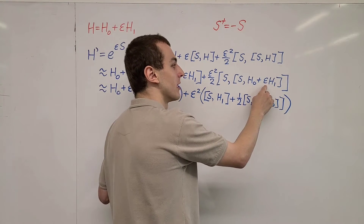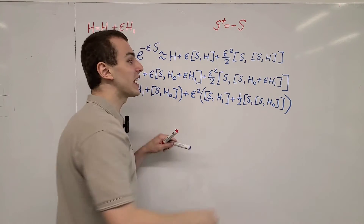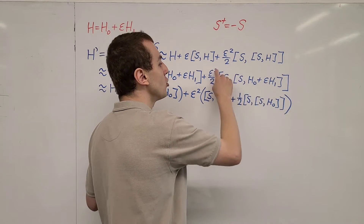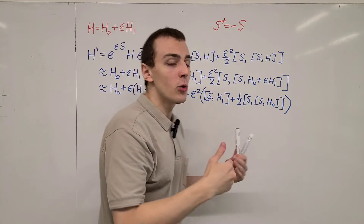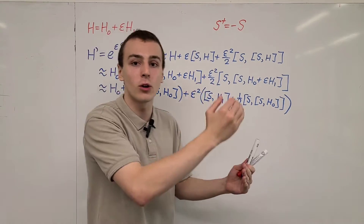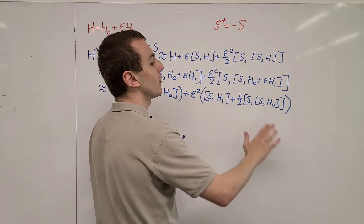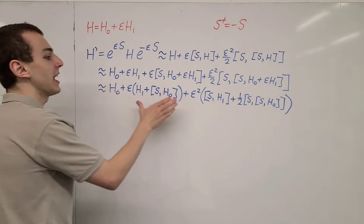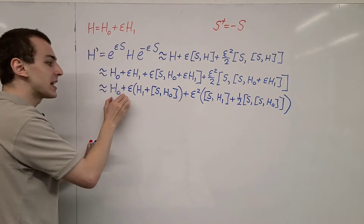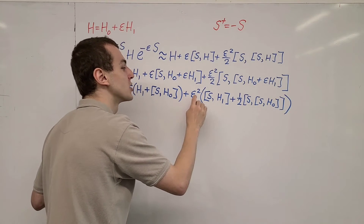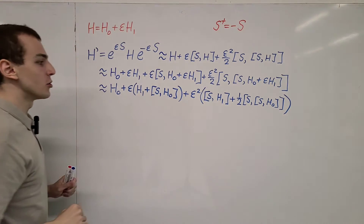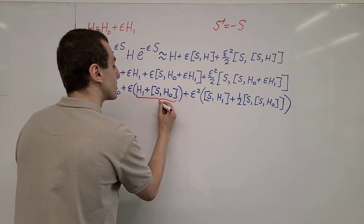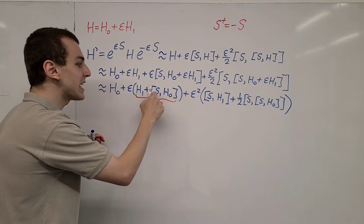There are third order contributions — for example, a term with epsilon squared out front multiplied by epsilon from inside gives epsilon cubed. But since we're doing second order perturbation theory, any terms with epsilon cubed are going to get thrown away. If we wanted to go up to third or fourth order, we would include those terms, but here we ignore them. We now have a zeroth order term, a first order term, and a second order term. What we want to do is get rid of this first order term by setting H1 plus the commutator of S with H0 equal to zero.